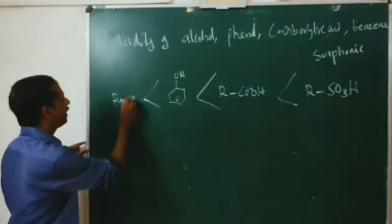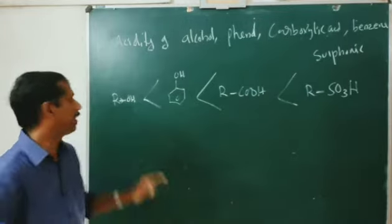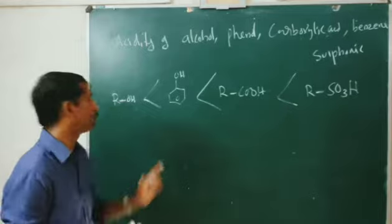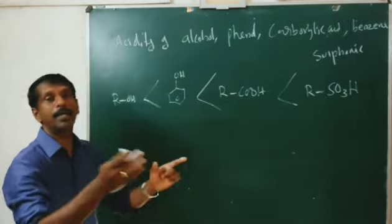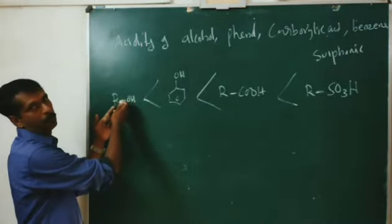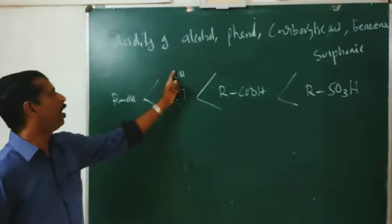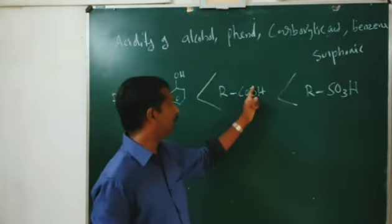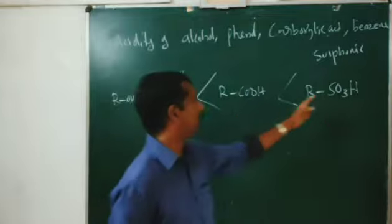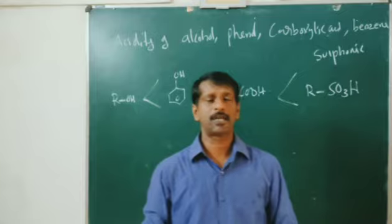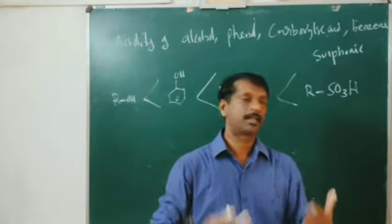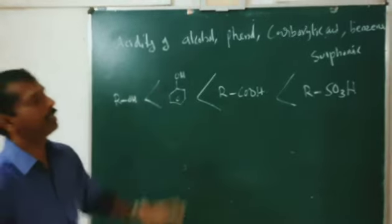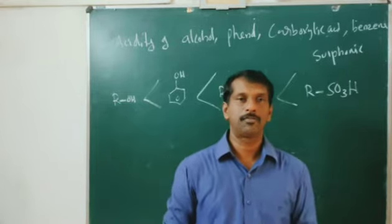The alkyl group pushes electrons and increases the negative charge on oxygen, so removal of H plus is difficult — that's why alcohol is weakly acidic. The phenoxide ion can be stabilized by resonance, making H plus removal somewhat easier. The carboxylate ion can also be stabilized by resonance. In RSO3H, the resonance stabilization of the sulphonate ion is even stronger, so sulphonic acid is the strongest acid in this series. That is the order of acidity. Thank you.